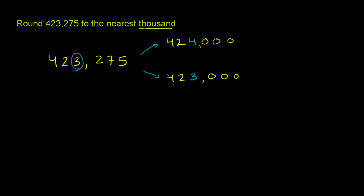we just look at the digit one place to the right of the 3. So we look at the 2 right there. If that digit is 5 or greater, you round up. If it's less than 5, you round down.